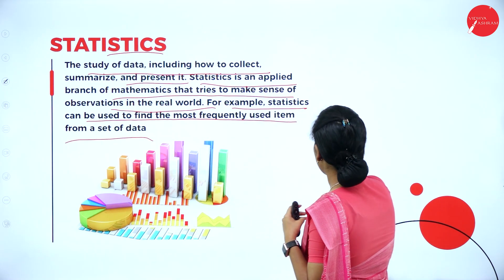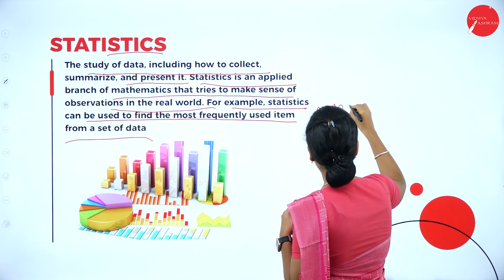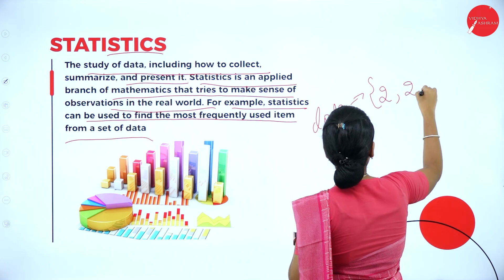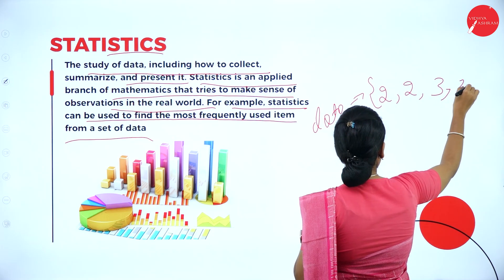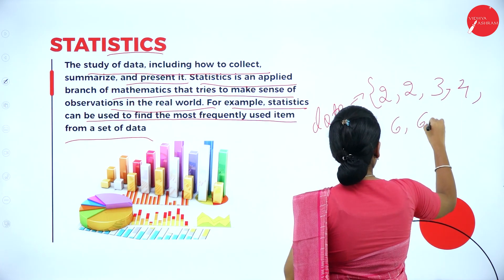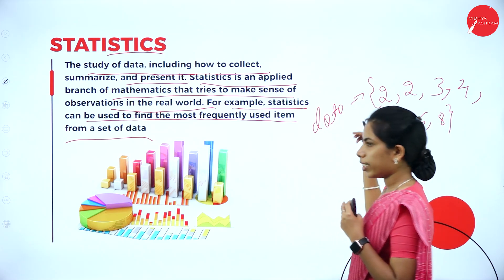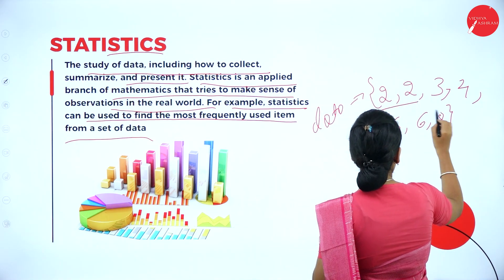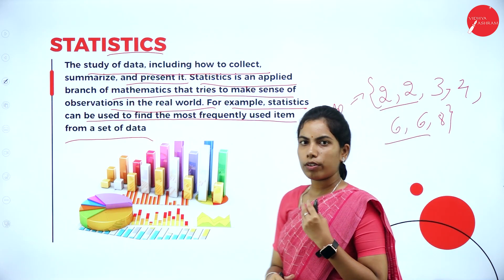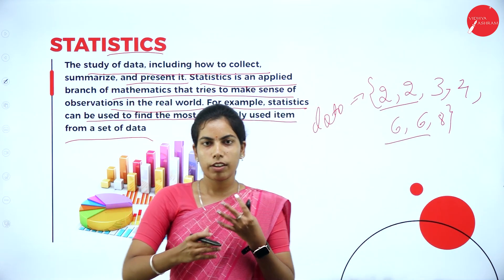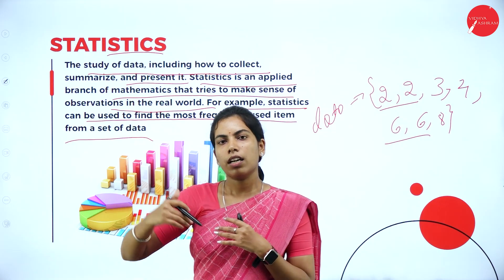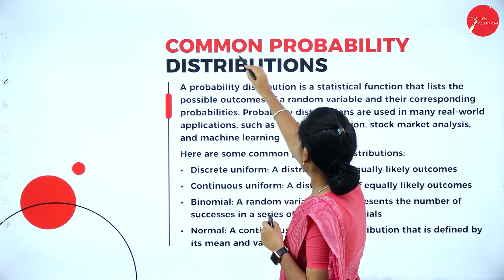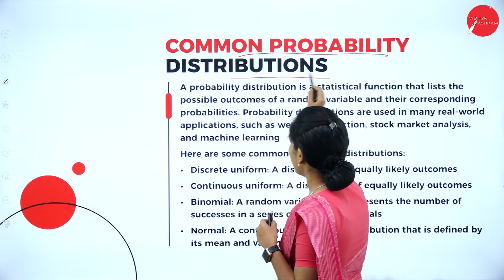Consider one dataset containing the numbers: 2, 2, 3, 4, 6, 6, 8. How frequently is data repeated? Here you can see that 2 is repeated and 6 is repeated, while 4, 3, and 8 are not repeated. Measuring how much data is repeated consecutively — that is what statistics tells us. So here you can see some common probability distributions.